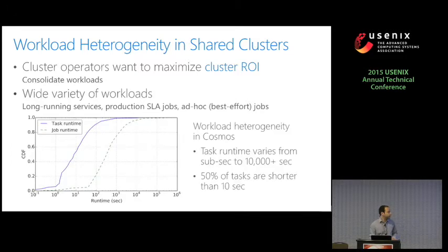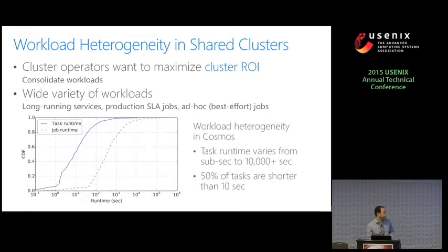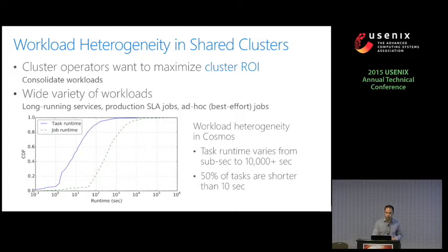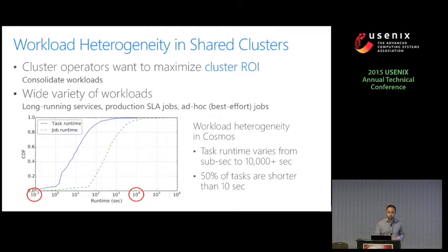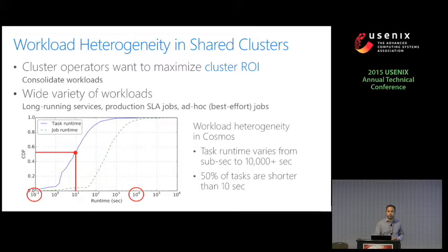To become more concrete, here I'm showing what is happening in Cosmos today. Cosmos is one of the central cluster frameworks at Microsoft. I'm plotting the CDF of the task run time and job run time of jobs submitted in Cosmos. The blue solid line is the task run time; the other line is the job run time. Two main observations: first, there is great variation in task run time, from sub-second to tens of thousands of seconds. Second, more than 50% of tasks are small — shorter than 10 seconds.